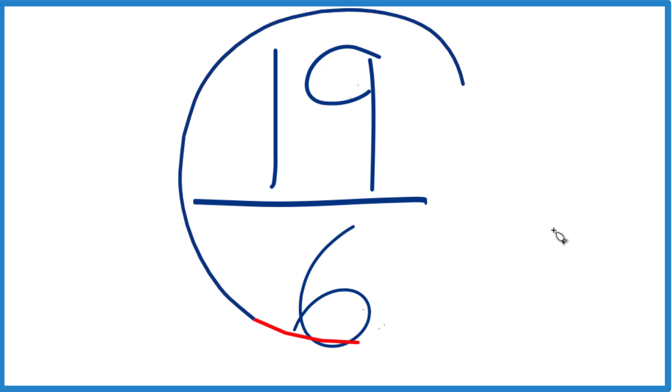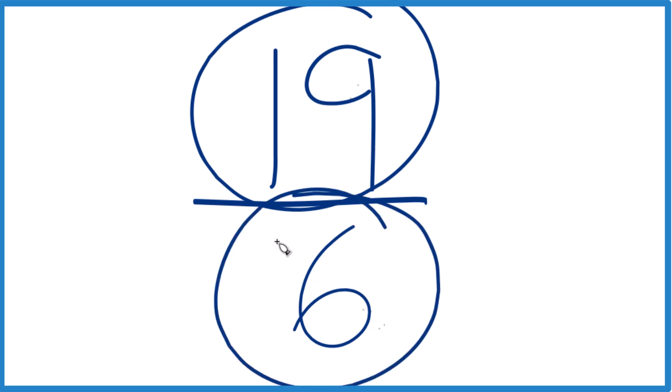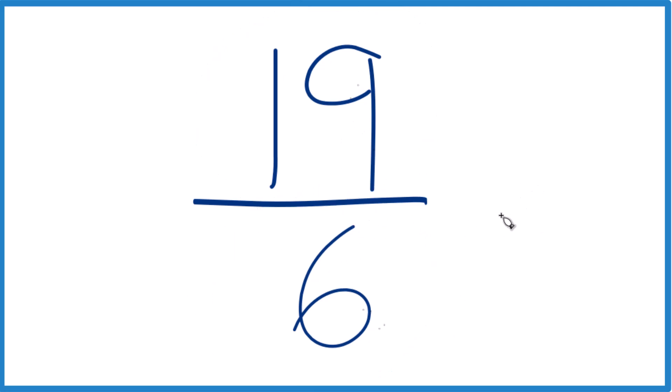So this here is already simplified. We can't reduce it any further. But since the numerator is 19, this is larger than the denominator 6, we could write it as a mixed number like this.